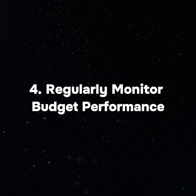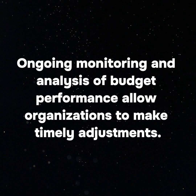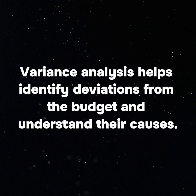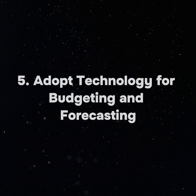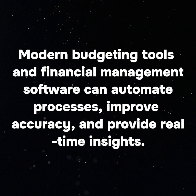4. Regularly monitor budget performance: ongoing monitoring and analysis of budget performance allow organizations to make timely adjustments. Variance analysis helps identify deviations from the budget and understand their causes. 5. Adopt technology for budgeting and forecasting: modern budgeting tools and financial management software can automate processes, improve accuracy, and provide real-time insights. Technology helps streamline budgeting and reduces the risk of errors.